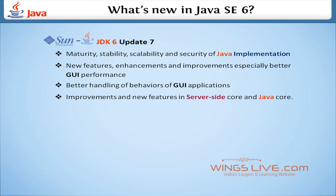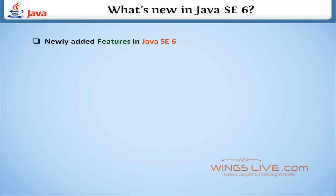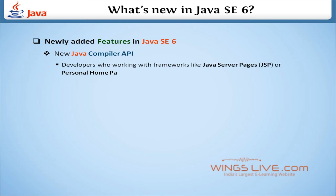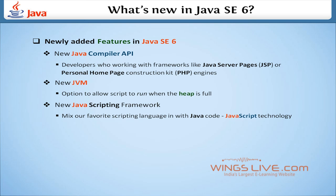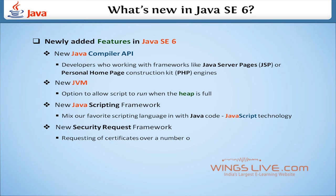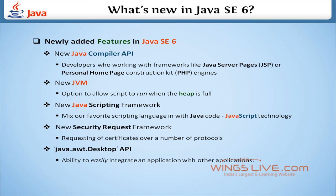Let's discuss the newly added features in Java SE 6. The first is the New Java Compiler API, which benefits developers working with frameworks like Java Server Pages (JSP). Next is the New JVM, which has the option to allow scripts to run when the heap is full. The New Java Scripting framework lets us mix favorite scripting languages like JavaScript with Java code. The New Security Request framework enables requesting certificates over a number of protocols. Additionally, the newly added java.awt.desktop API package offers the ability to easily integrate an application with other applications.